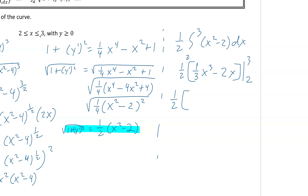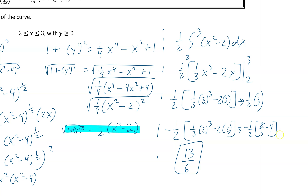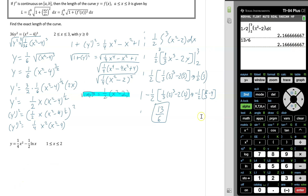So this is 1/2 times [1/3 x cubed minus 2x] from 2 to 3. We plug in 3: 1/3 times 3 cubed minus 2 times 3, and then subtract — with the half — 1/3 times 2 cubed minus 2 times 2. So 3 cubed is 27, divided by 3 is 9; 9 minus 6 is 3. Then here: 8 over 3 minus 4. If we plug all this in the calculator, we get 13/6. We double-check this on our calculator to make sure that integral gives the same answer, and it is 13/6.